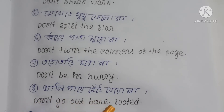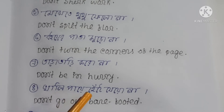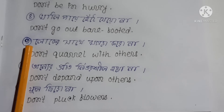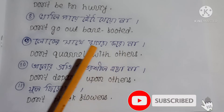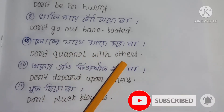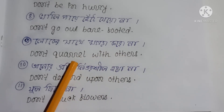Number 7: Don't go out barefoot — খালি পায়ে হেঁটে যেওনা। In English: 'Don't go out with bare feet.' 'Go' means যাওয়া, 'Out' means বাইরে, 'Bare feet' means খালি পায়ে। Number 9: Don't quarrel with others — লোকের সাথে ঝগড়া করোনা। In English: 'Don't quarrel with others.' 'Quarrel' means ঝগড়া।